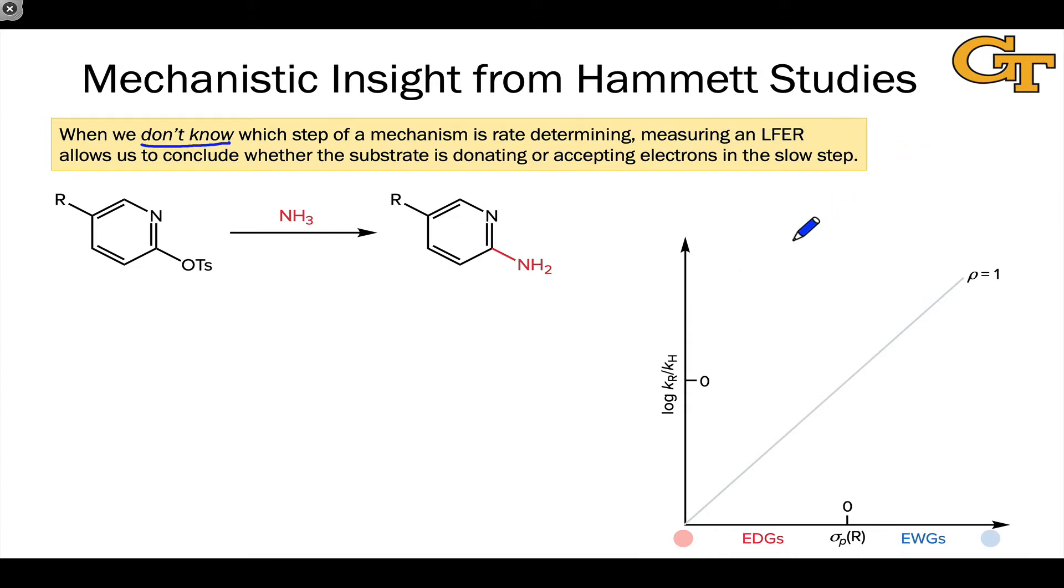Measuring a linear free energy relation allows us to draw this conclusion about whether the substrate is donating or accepting electrons in the rate determining step, if there is a rate determining step.